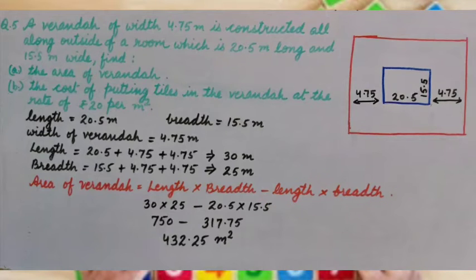That is 30 multiplied by 25 minus 20.5 multiplied by 15.5. When we solve it, we get area of veranda is 432.25 meter square.